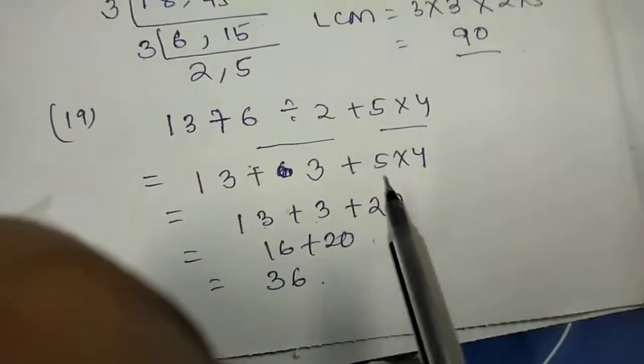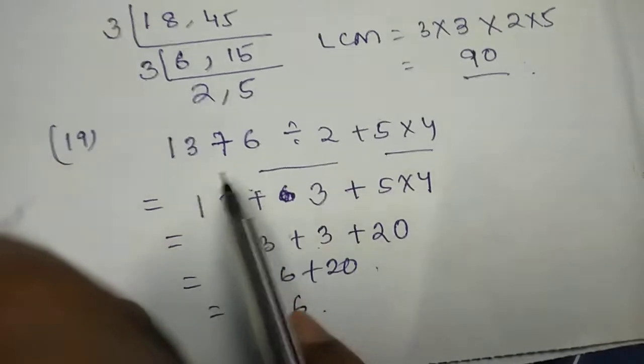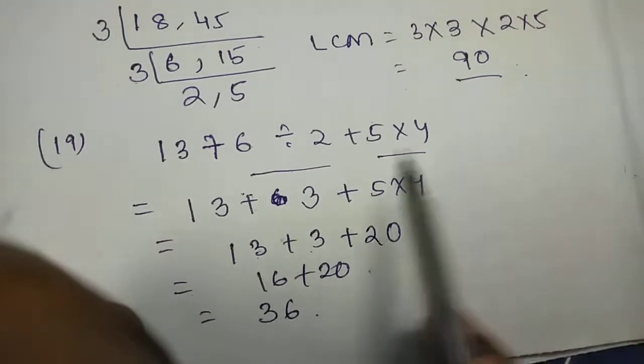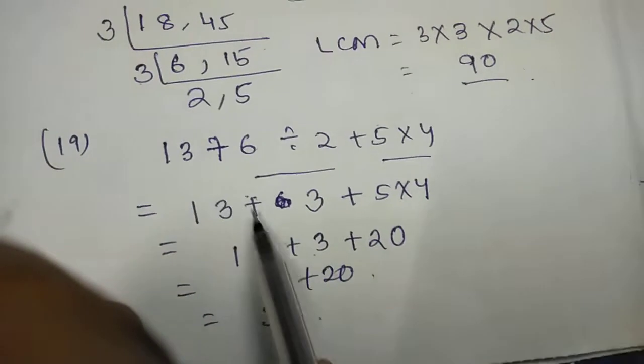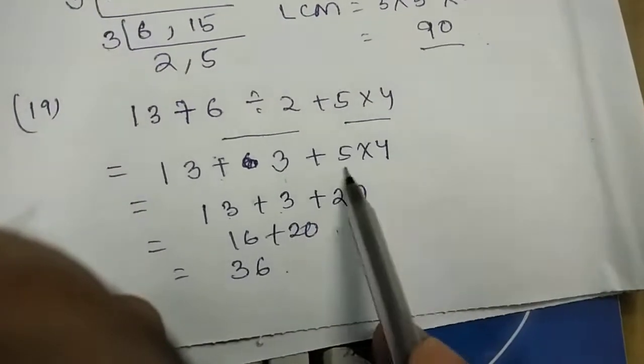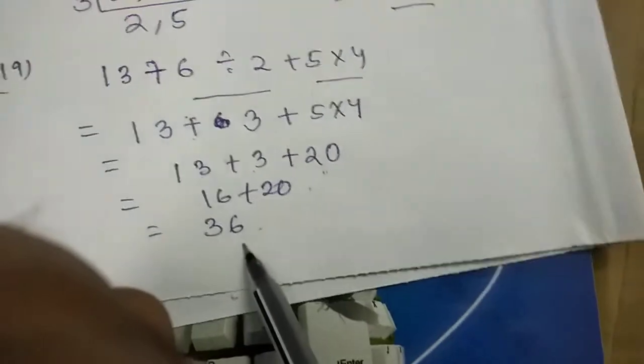Now question number 19. 13 plus 6 divided by 2 plus 5 into 4. We will put the BODMAS rule, so 13 plus 6 divided by 2, 3, then next step 13 plus 3, 5, 4, 20, then add all, it comes 36.